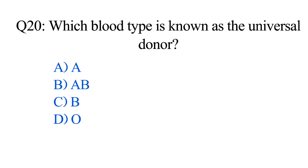Question number twenty. Which blood type is known as the universal donor? Option A: A. B: AB. C: B. D: O. The correct option is Option D: O.